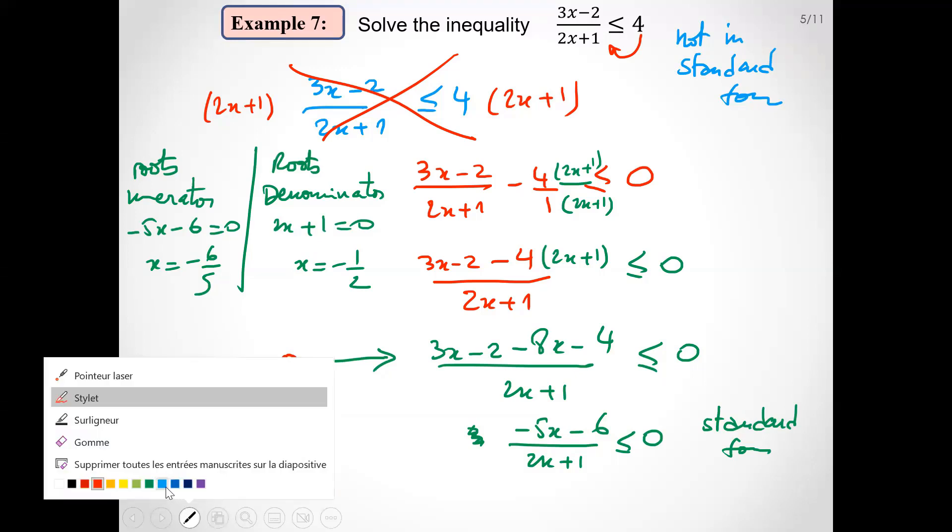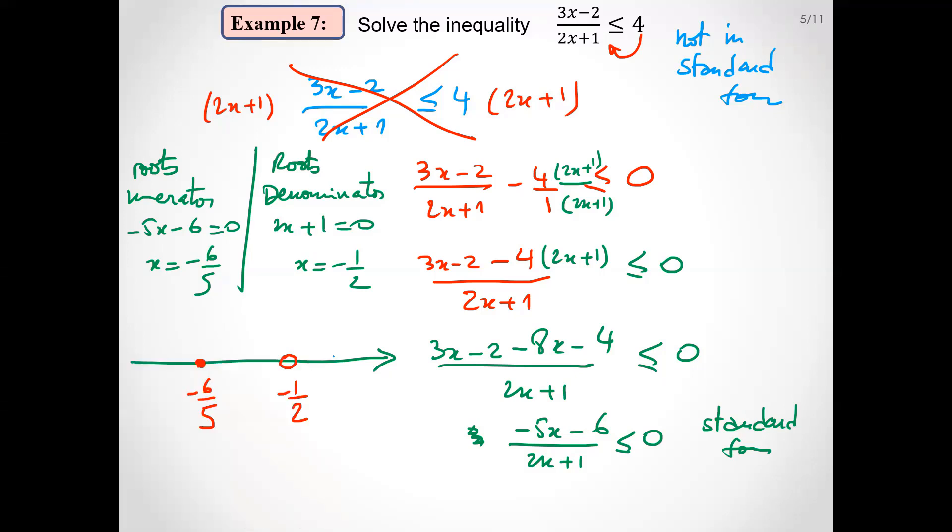Then take test points: 0, minus 1, minus 2. Replacing by 0, we get minus 6 over 1, so negative. By minus 1, we get minus 1 over minus 1, so positive. And replacing by minus 2, 4 over minus 3, it will be negative in this case.